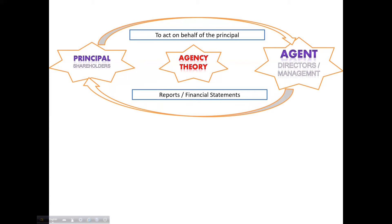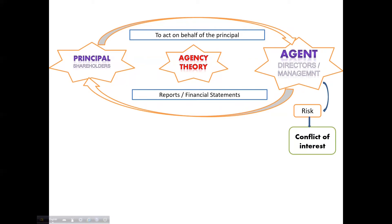The expectation is that the agent will provide true and fair information to the principal, but there is a risk that the agent might not do so in all cases because of conflict of interest. For example, management might expect a higher bonus for a particular year, and they know that if the company's profit is very good, they will get better bonuses. So they will have a tendency to show a higher profit.